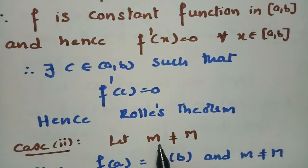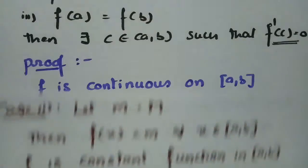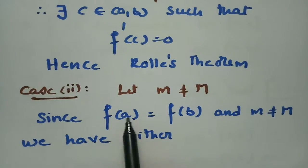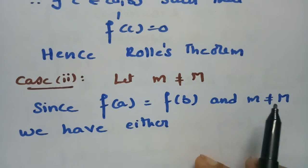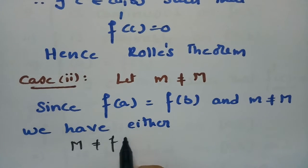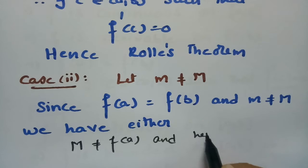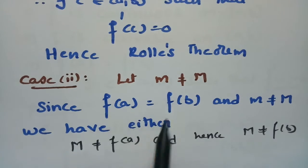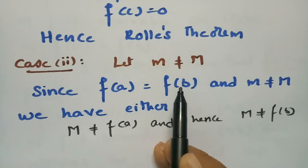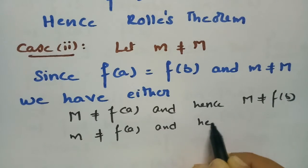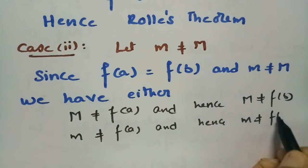Case 2: if small m is not equal to capital M, i.e., infimum not equal to supremum. Since from the third condition f(a) = f(b), and m ≠ M, then either capital M is not equal to f(a) — and hence not equal to f(b) — or small m is not equal to f(a) — and hence not equal to f(b).